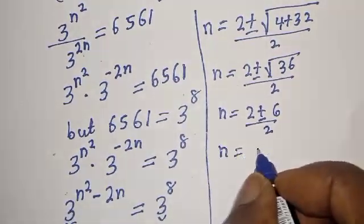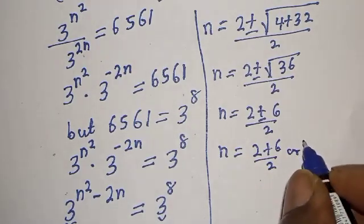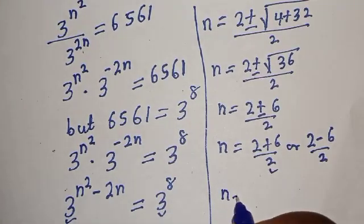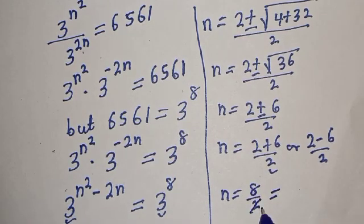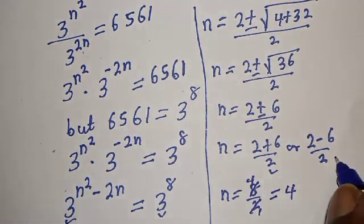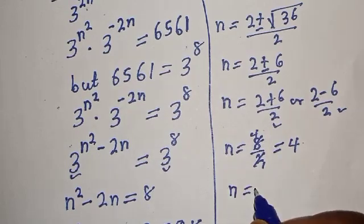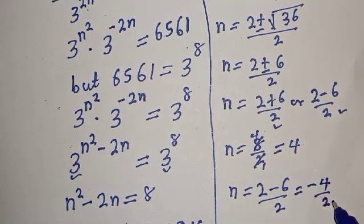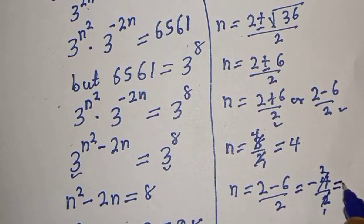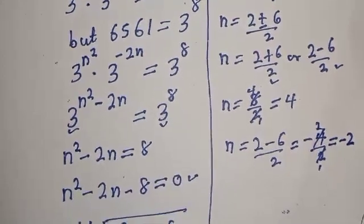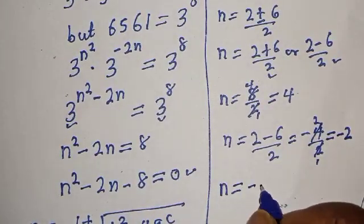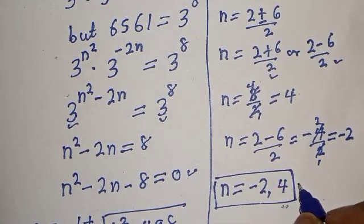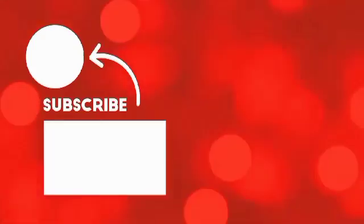So n equals 2 plus 6 over 2, or 2 minus 6 over 2. For the first case: n equals 8 over 2, which equals 4. For the second case: n equals 2 minus 6 over 2, which is minus 4 over 2, equal to minus 2. Therefore, n equals 4 or n equals minus 2. These are the values of n. Before you leave, like, share, comment and subscribe. Thank you, bye bye.